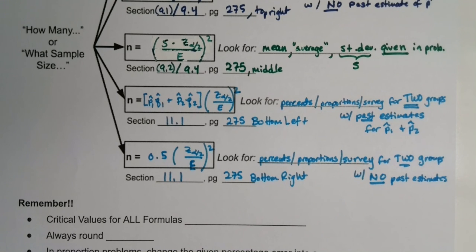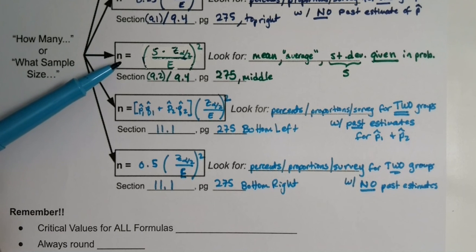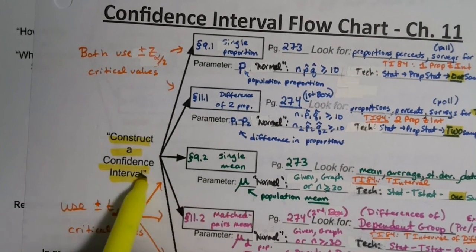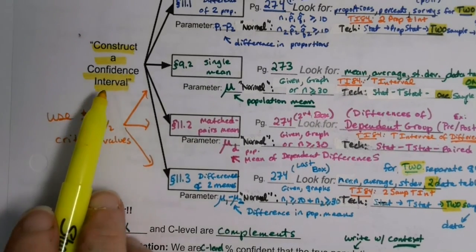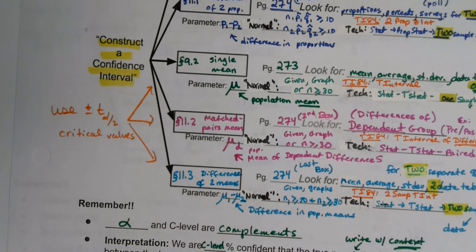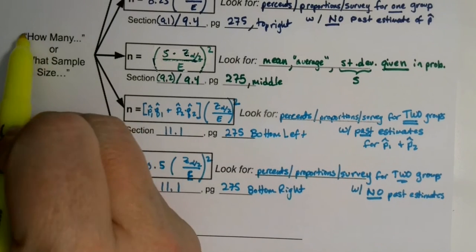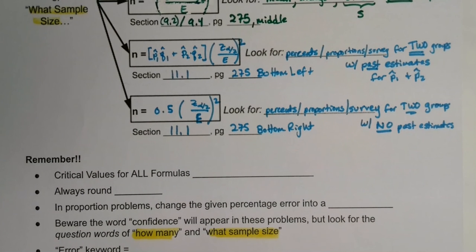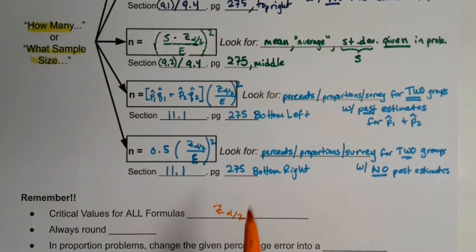The most unique one is the middle formula — if they're talking about averages or standard deviation, it has to be that one. Keep in mind all of these are different from confidence interval questions. Confidence interval questions ask you to construct a confidence interval, but these sample size questions use the question words 'how many' or 'what sample size.' All five formulas use a critical value of Z alpha over 2.